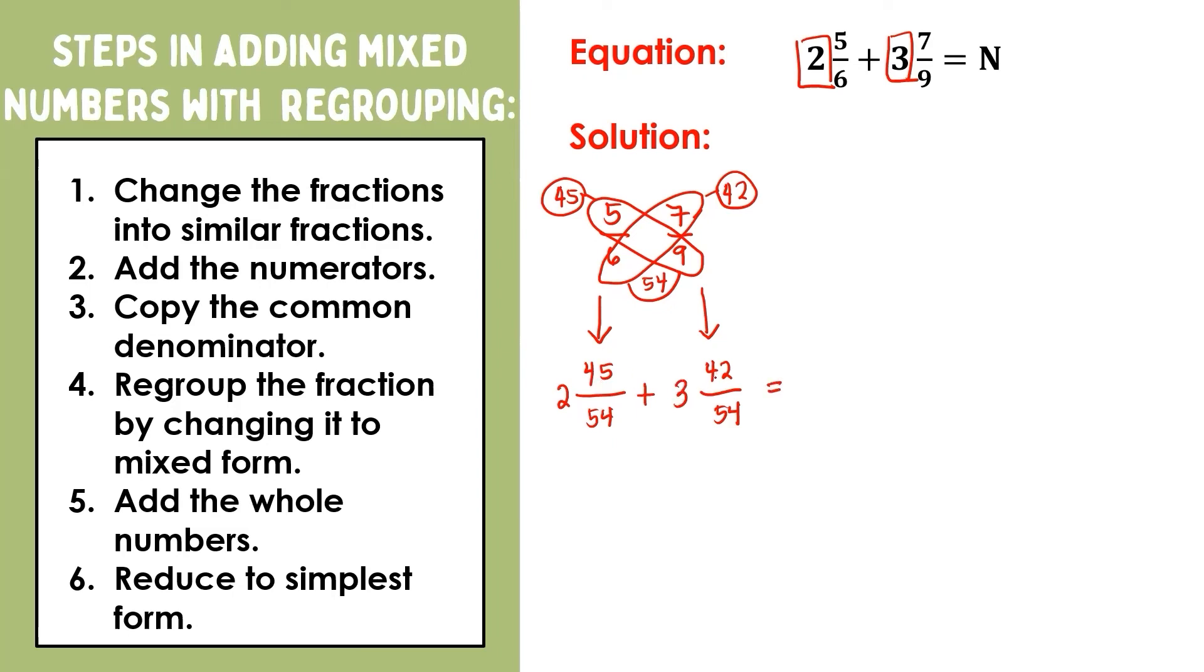Forty-five plus forty-two is eighty-seven. Then copy the common denominator, fifty-four. We're almost done. Now, let's regroup eighty-seven over fifty-four. Eighty-seven divided by fifty-four is one. One times fifty-four is fifty-four, and eighty-seven minus fifty-four is thirty-three. So we have one and thirty-three over fifty-four. Next, let's add the whole. Two plus three is five, plus this other whole here, one plus five, is six.